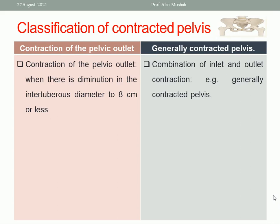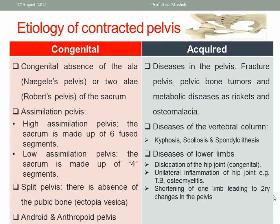The etiology of contracted pelvis can be divided into congenital or acquired. Congenital causes include absence of one ala of the sacrum, called Naegele's pelvis, or two alae, called Robert's pelvis, or assimilation pelvis — high or low. In high assimilation pelvis, the sacrum is formed of six fused segments, while in low assimilation pelvis the sacrum is made up of four segments. There may also be split pelvis with absence of the pubic bone, occurring with ectopia vesicae, or abnormal shapes like android and anthropoid pelvis.